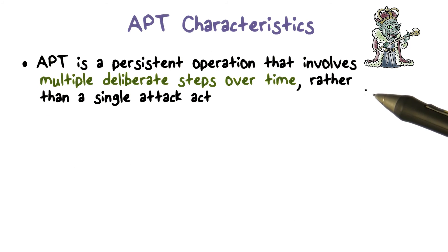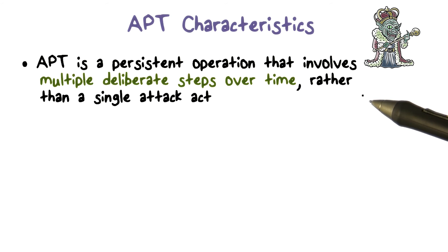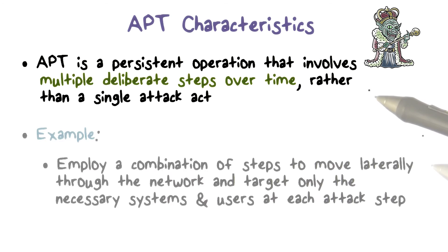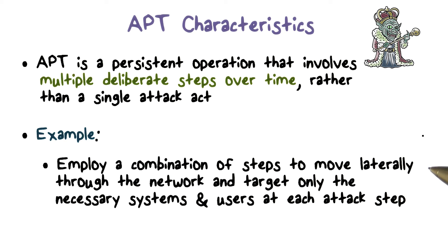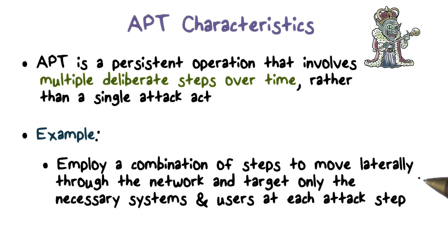APTs are often designed to stay in the compromised organization for a long time, always looking for more valuable data to steal. An APT can include a number of steps, and at each step it only focuses on a subset of users and only part of the network. At each step it may use a different version of the malware, and when it moves from one part of the network to another, it may clean itself from the old part. That is, at any given time it's only present at the specific target — in other words, its footprint remains very small.